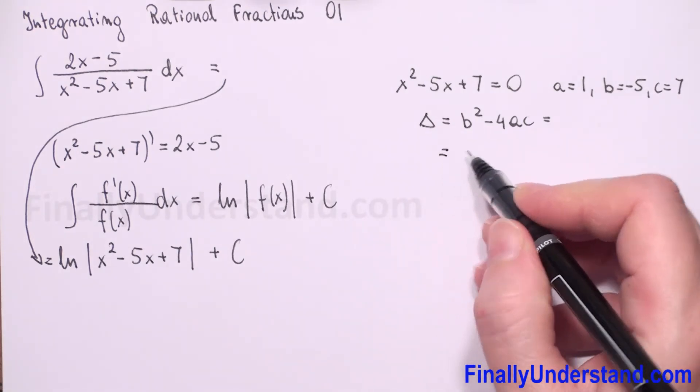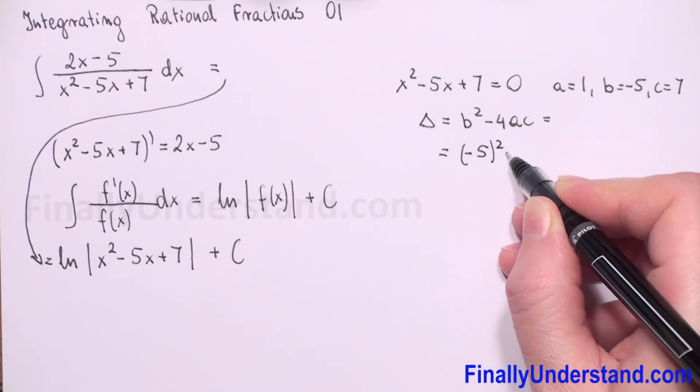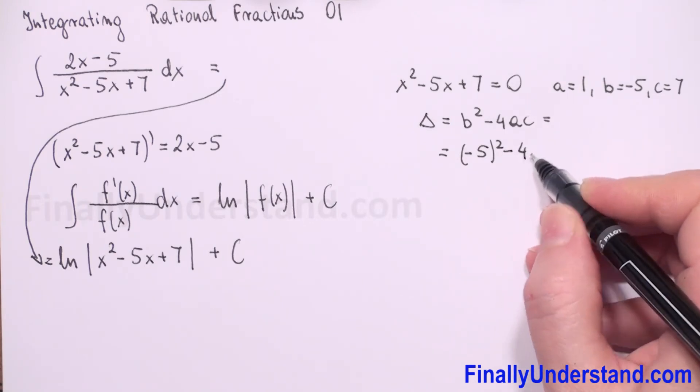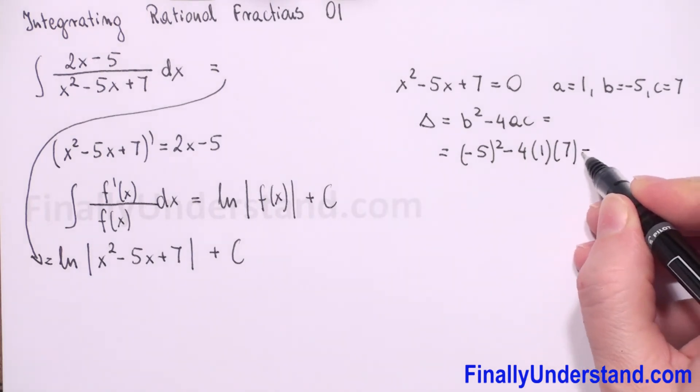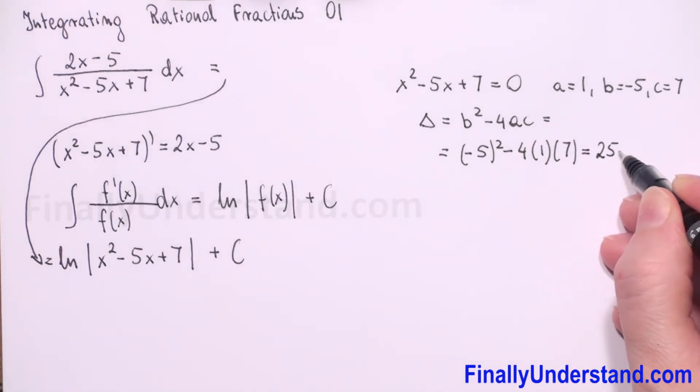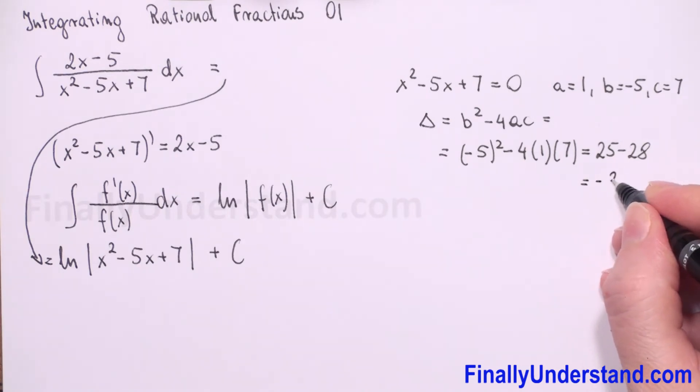So this is equal to b square. So we have negative 5 square minus 4 times a is 1 times c is 7. So this is equal to 25 minus 28. So this is equal to negative 3. This is less than 0.